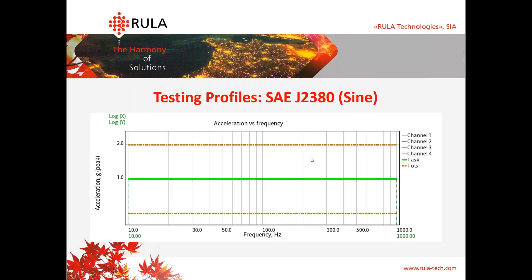Now we're going to talk about our first profile: a sine profile from SAE J2380. It's a regular sine — here you see the profile running from 10 Hz up to 1000 Hz at 1g level, with tolerance lines at 6 dB.